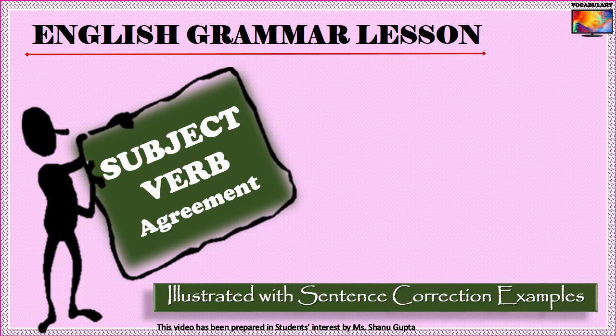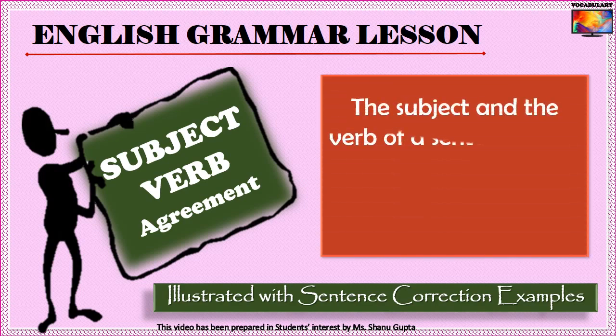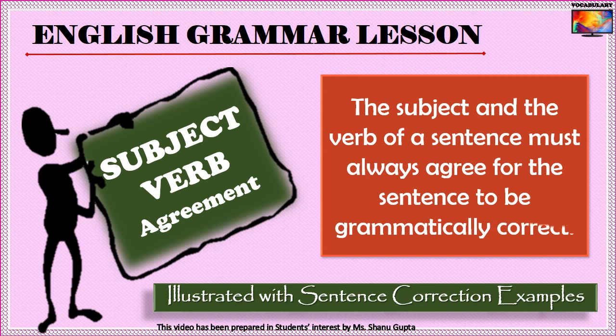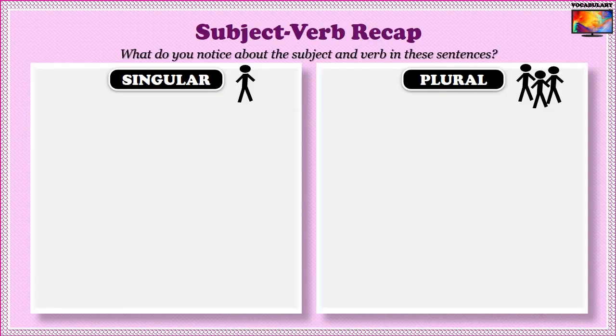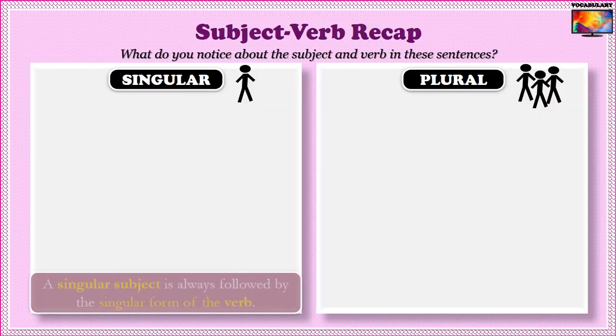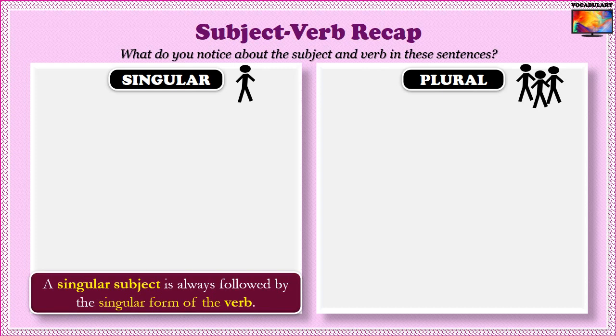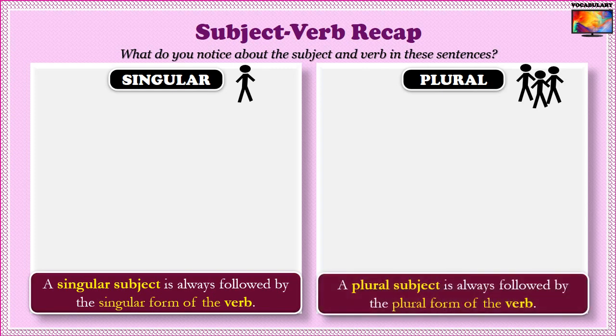Subject Verb Agreement implies that the subject and the verb of a sentence must always agree for the sentence to be grammatically correct. That means a singular subject is always followed by the singular form of the verb, and a plural subject is always followed by the plural form of the verb.